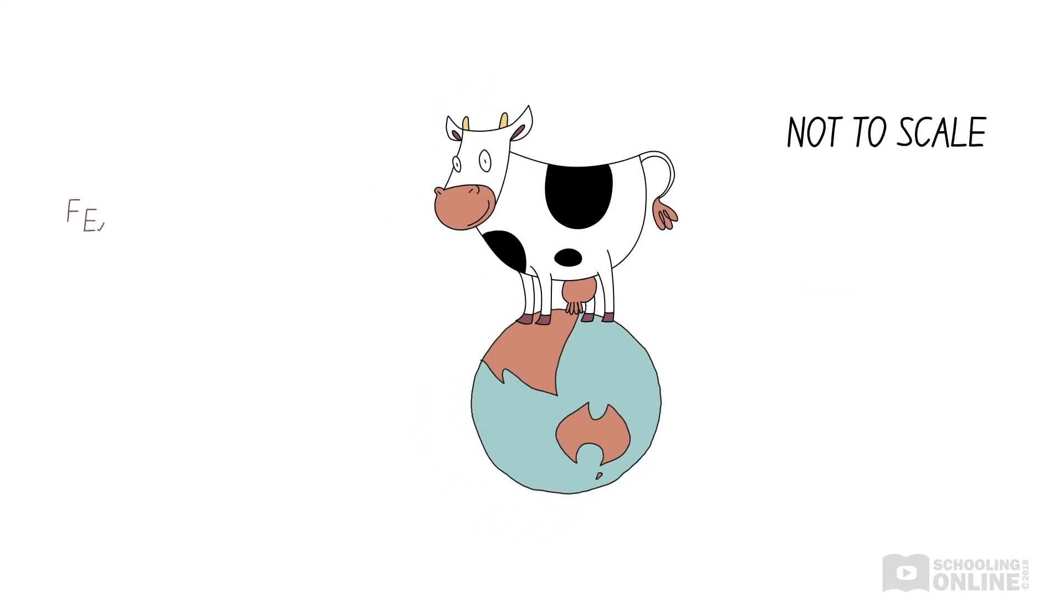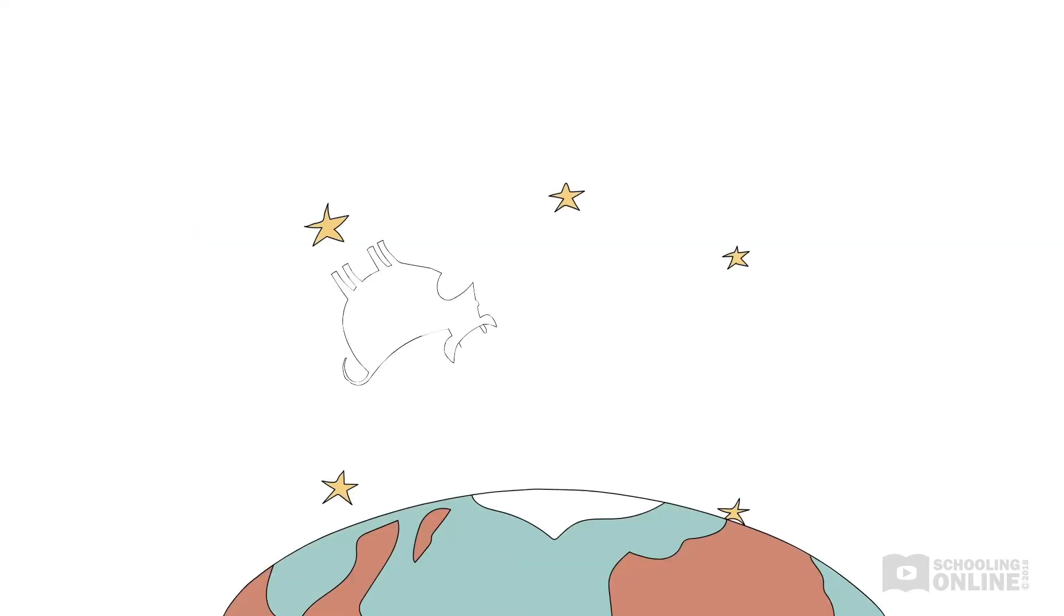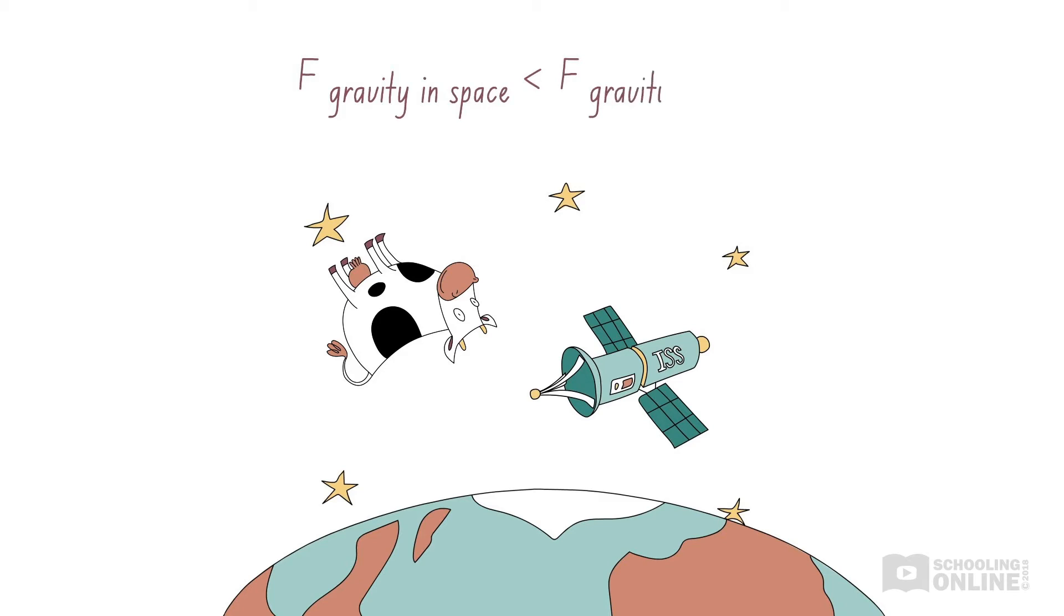The cow is pulling on the Earth with exactly the same amount of force as the Earth is pulling on the cow. If we place our protagonist at the same altitude as the International Space Station, the gravitational force it experiences will be less than what it experiences on the surface of the Earth.